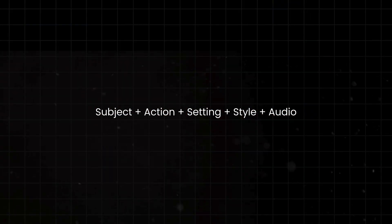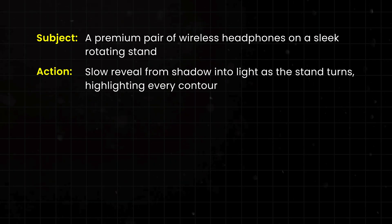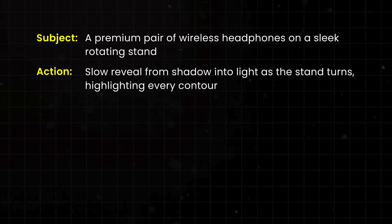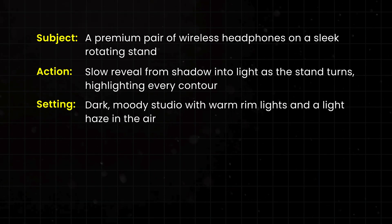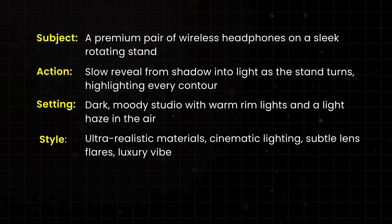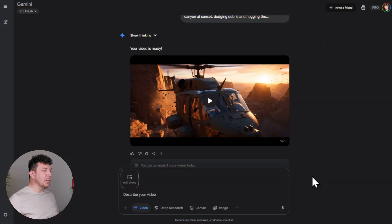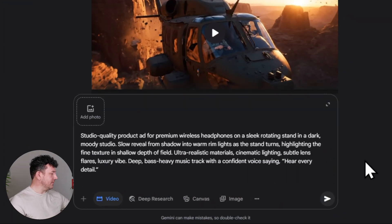Now let's switch gears and create an ad you can use to promote a real product — something that looks professional, like studio quality, like it came out of an expensive brand campaign. Using the same five-step prompt formula: for subject, we've got a premium pair of wireless headphones on a sleek rotating stand. The action is a slow reveal from shadow into light as the stand turns, highlighting every contour. The setting is a dark, moody studio with rim lights and a light haze in the air. For style, I want ultra-realistic materials, cinematic lighting, subtle lens flares, and that luxurious vibe. For audio, a deep bass-heavy music track with a confident voice saying 'Hear every detail.' Here's our full prompt — now let's go ahead and hit submit and see what VO3 comes up with.